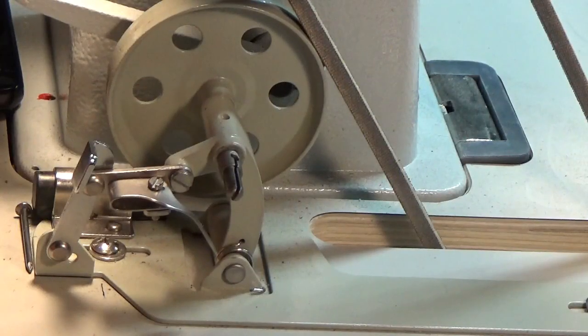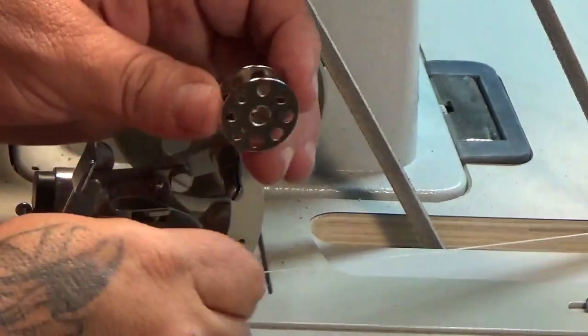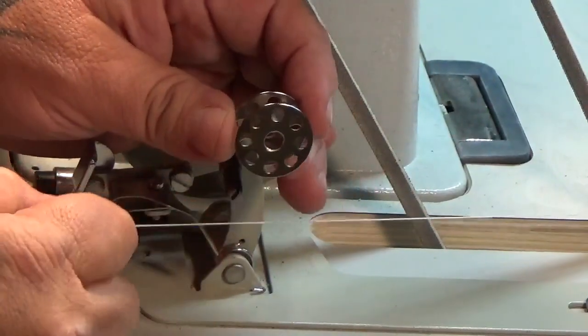Next, you'll grab your bobbin and grab the thread that's between the tension discs and the eyelet.